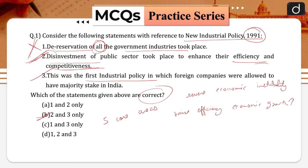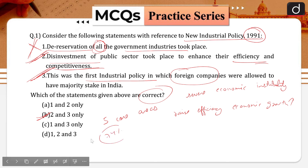Now, liberalization of foreign investment: this was the first industrial policy in which foreign companies were allowed to have majority stake in India. For export trading houses, FDI up to 74% was allowed. Today there are numerous sectors in the economy where the government is also allowing 100% FDI.